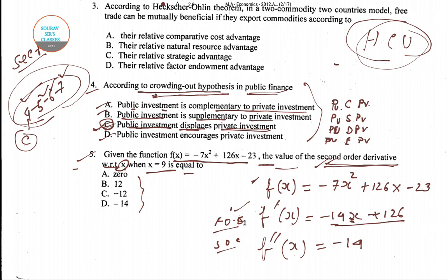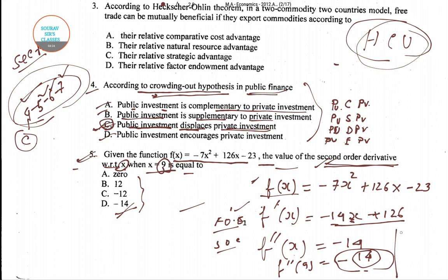When x equals 9, since there is no x term in the second order derivative, the value remains minus 14. So option D is the right answer for question number five. We wrote down the function, differentiated it twice, and since there was no x term left, we simply get minus 14 regardless of x equals 9.